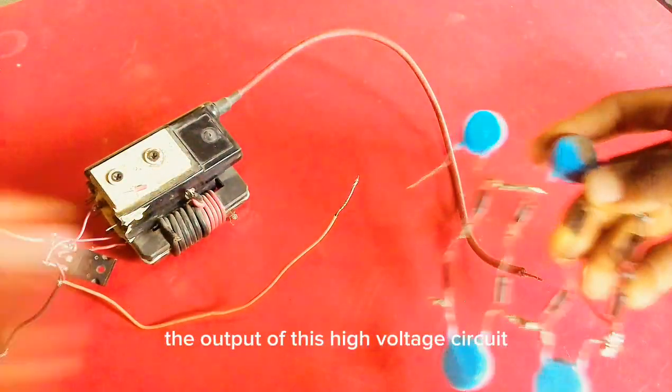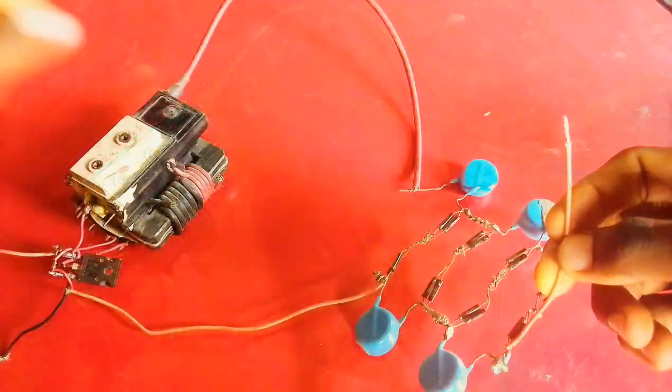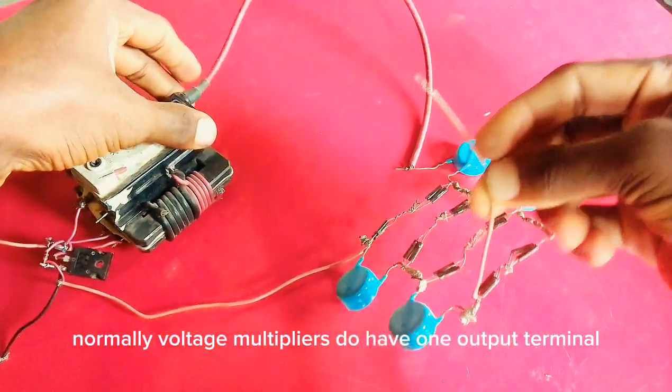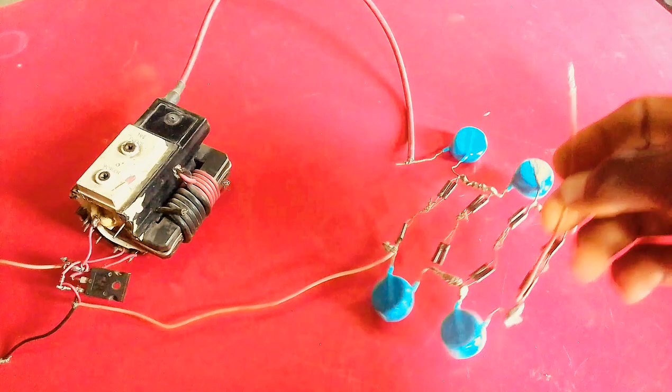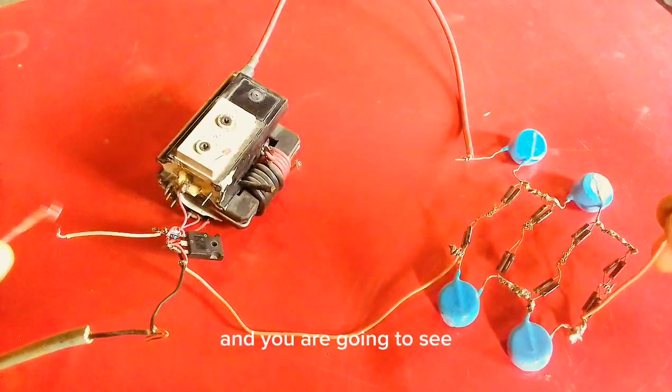So what I'm going to do is to connect the output of this high voltage circuit. Normally voltage multipliers do have one output terminal. So now I'm going to connect this and you're going to see...